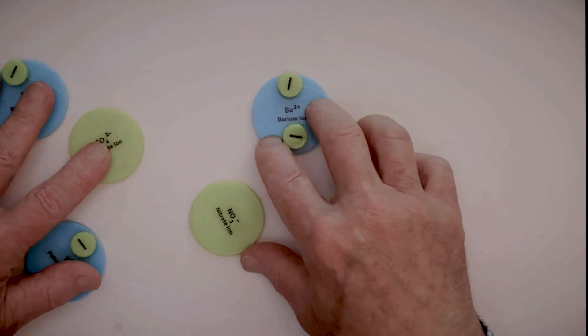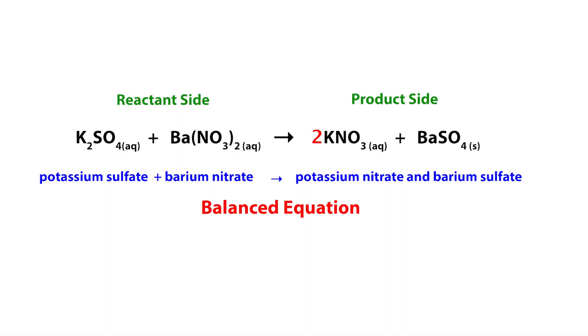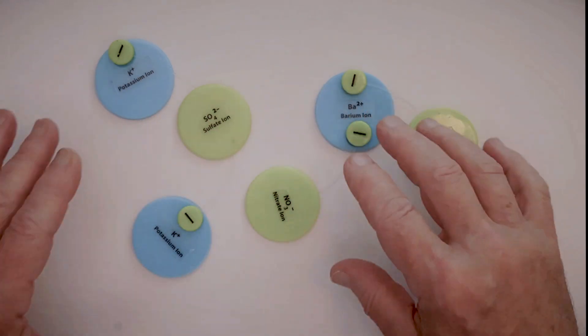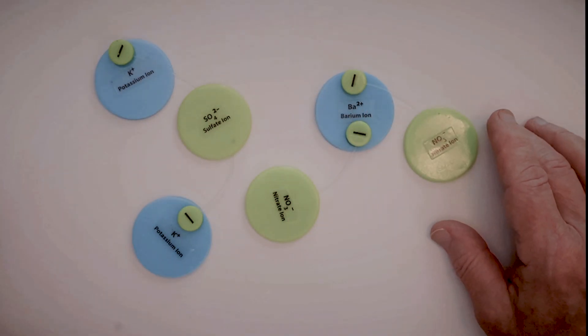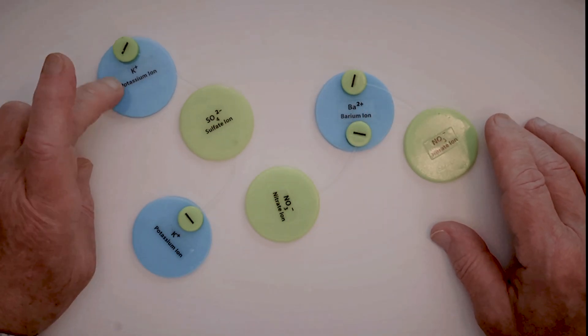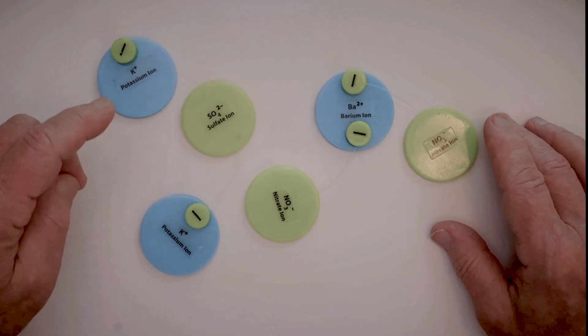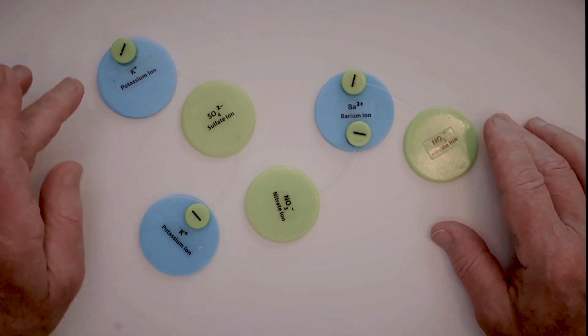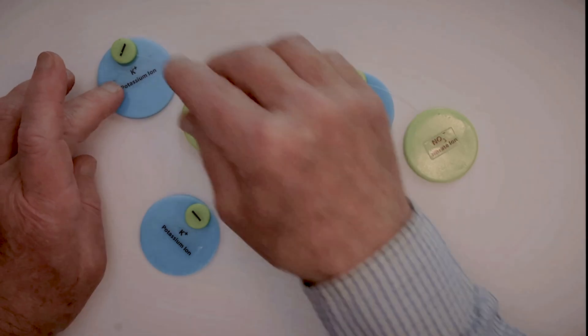Now, this is the reactant side of the equation. When these are in the water, they're going to come apart. Anything that's got a potassium ion, any alkali metal—sodium, potassium, lithium, rubidium, cesium, any of those—is going to come apart in water.